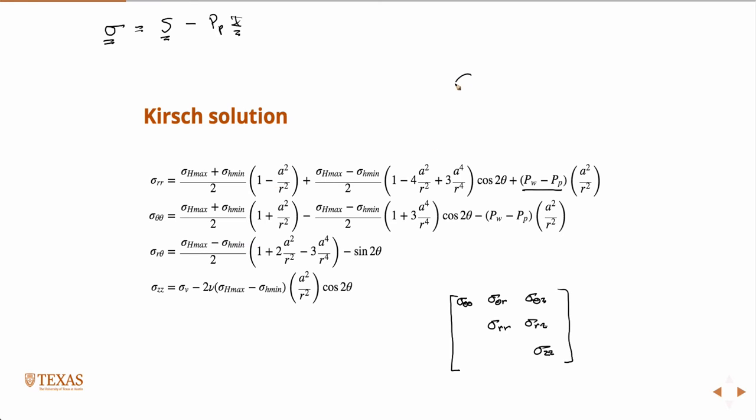We also have some terms there. Here's our circular wellbore. R is going to be the distance from the center of the wellbore. So our coordinates start at the center, r is the distance from the center of the wellbore.